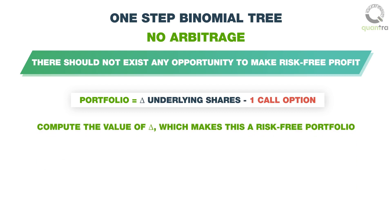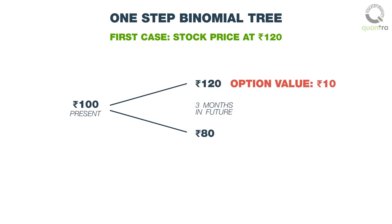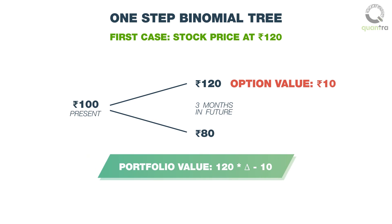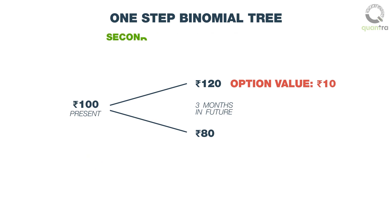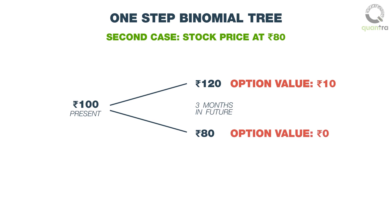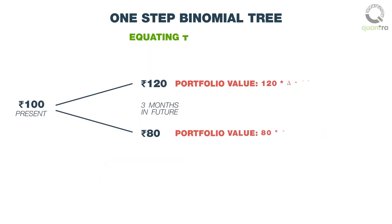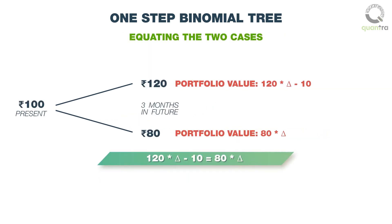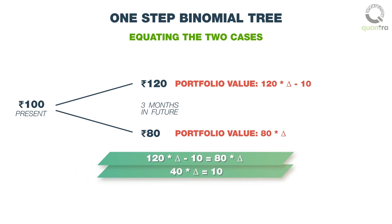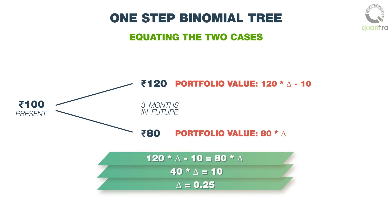We will compute the value of delta which makes this a risk-free portfolio by equating the values of the two outcomes after three months. In the first case, when the stock price is at 120 rupees and the value of the option is 10 rupees, the value of our portfolio is 120 times delta minus 10. In the second case, when the stock price is 80 rupees, the value of our long position is 80 delta and the option expires worthless, giving a portfolio value of 80 delta. Equating these two cases: 120 delta minus 10 equals 80 delta, which implies 40 delta equals 10. We see that when delta is equal to 0.25, we can create a risk-free portfolio.